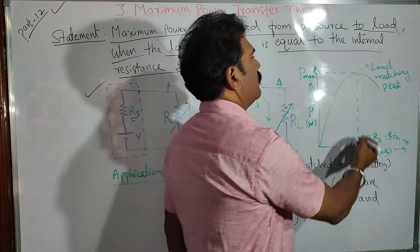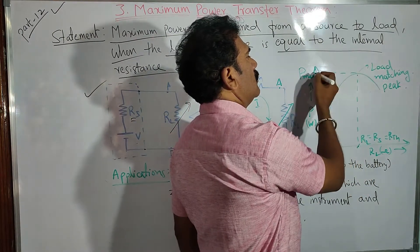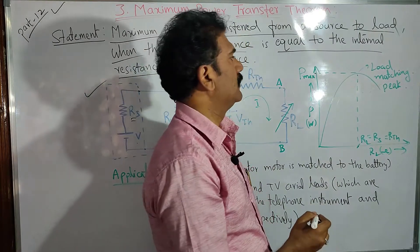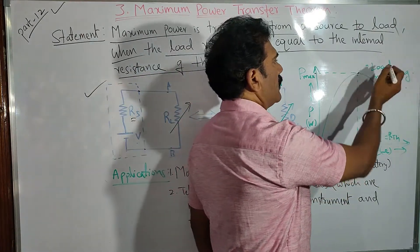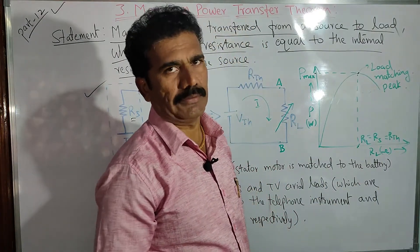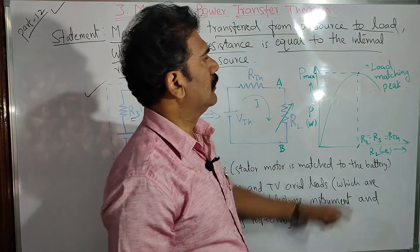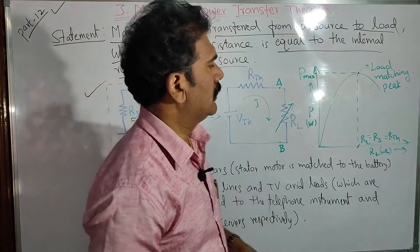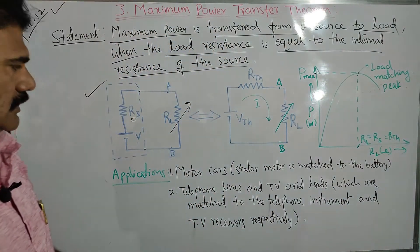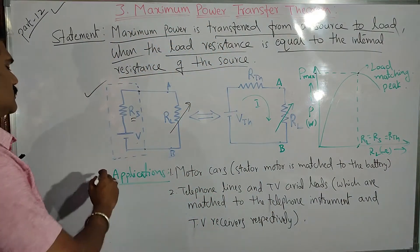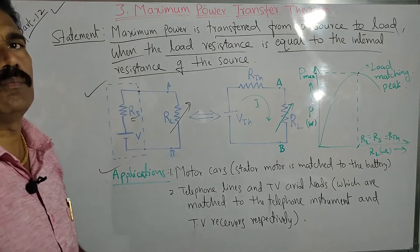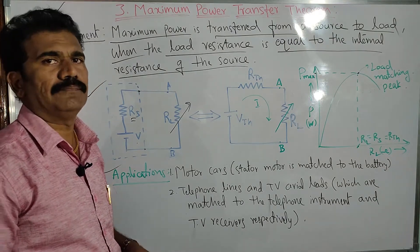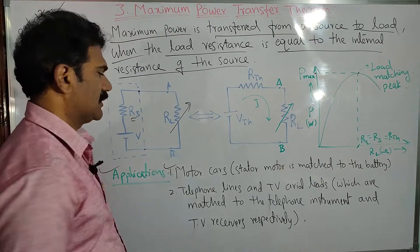At the maximum power, the y-axis shows the peak value. That particular point is called the load matching point, and the peak obtained in the curve is also called the load matching peak. Now let us see the applications — suppose you are able to get the maximum power from the source, what are the applications of that theorem?